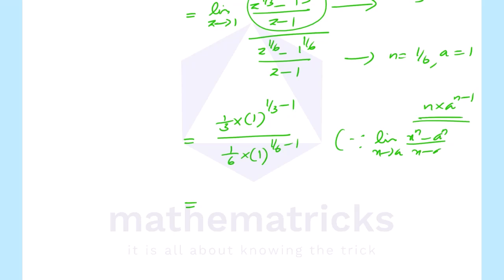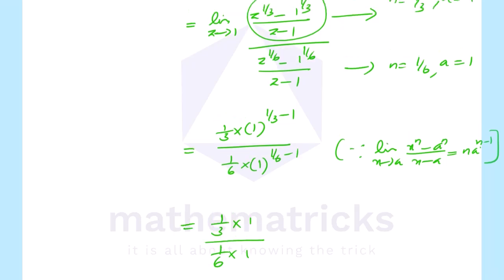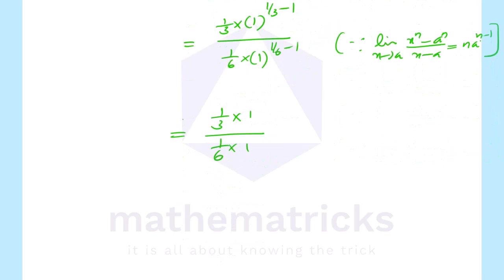Applying the formula: a raise to n divided by x minus a equal to n into a raise to n minus 1. This gives 1 by 3 into 1 raise to 1 by 3 minus 1, that is 1, divided by 1 by 6 into 1 raise to 1 by 6 minus 1, that is also 1. So 1 by 3 divided by 1 by 6, multiplying by 6 by 1 gives 6 by 3, that is equal to 2. Answer is 2.